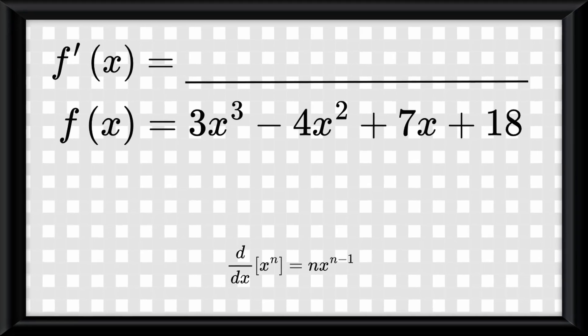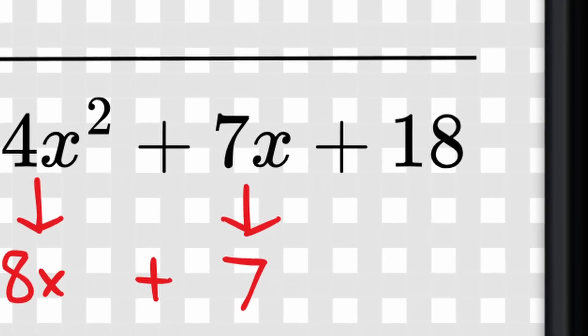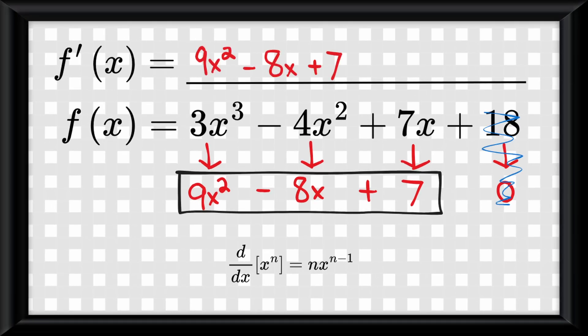The way we find the derivative is going term by term. So use the power rule on 3x cubed to get 9x squared. Again the power rule on negative 4x squared to get negative 8x. Again the power rule on 7x to get 7. And since 18 is a constant, its derivative is 0, meaning the final derivative function for this polynomial is this. See how easy that was?